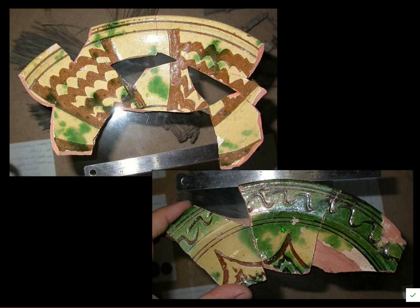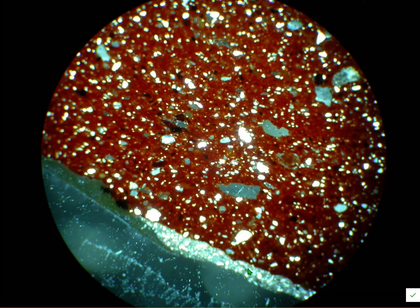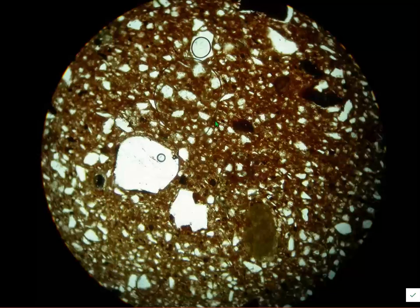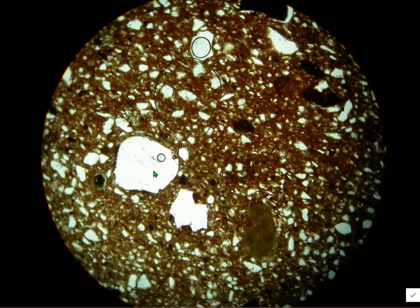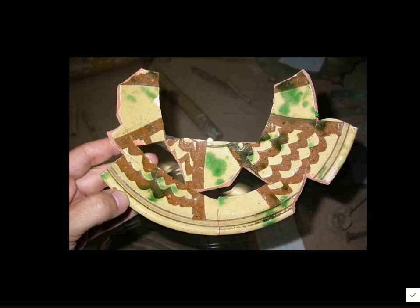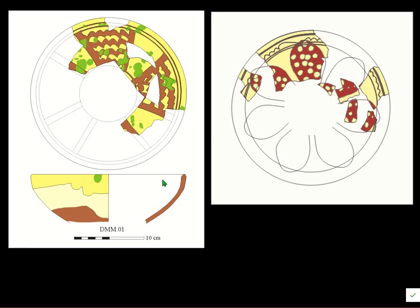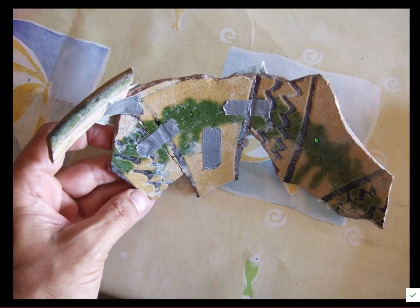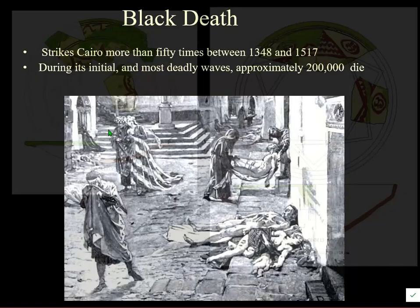They also have earthenwares with large areas excised, a nice earthenware body, and stone paste wares with a lead glaze. The fabric has a lot of large rounded quartz grains — suggesting Damascus as the production center, consistent with finding this type at the Damascus citadel excavations. They have quite a lot of this pottery, and here's a nice vessel with radiating petal shapes and star motifs.